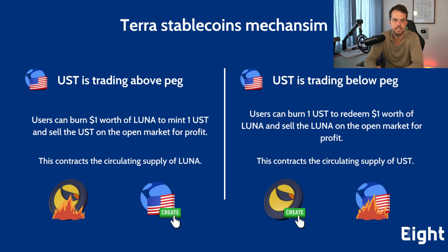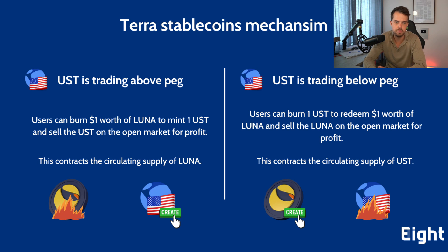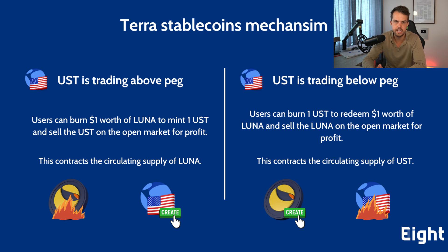UST is an algorithmic stablecoin closely tied to the Luna token, as shown in the diagram on screen. The dollar peg was ensured by minting and burning Luna. When UST traded above its peg, users could burn one dollar's worth of Luna to mint one UST, then sell the newly minted UST on the open market and profit from the difference. This contracted Luna's circulating supply, and as demand for UST grew, more Luna was burned — which was the big reason Luna experienced a massive price surge.